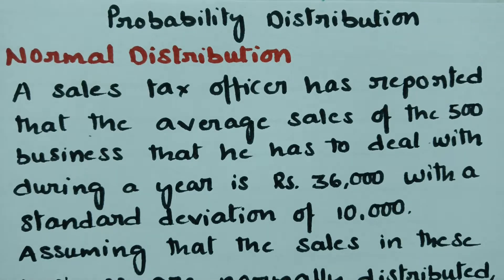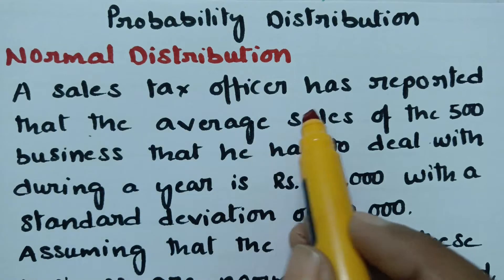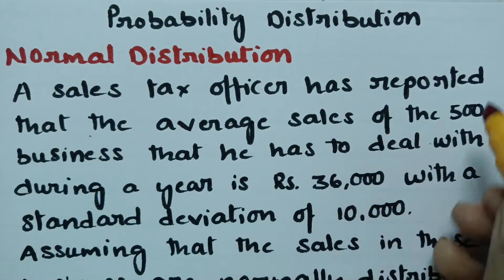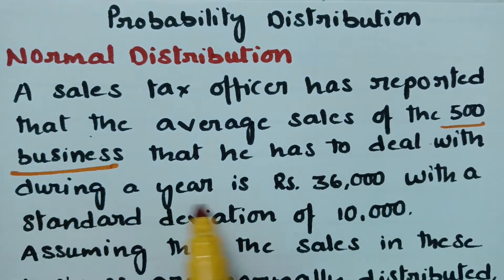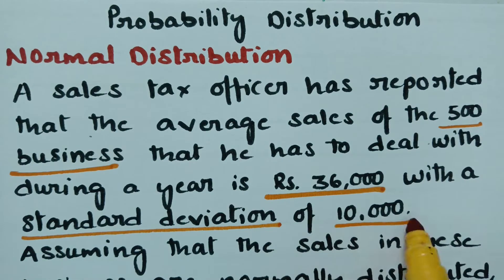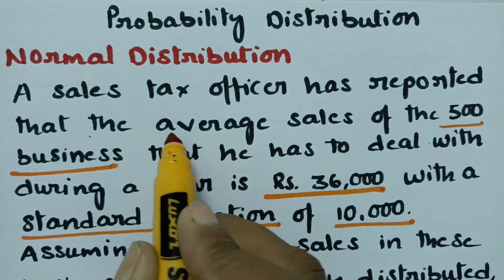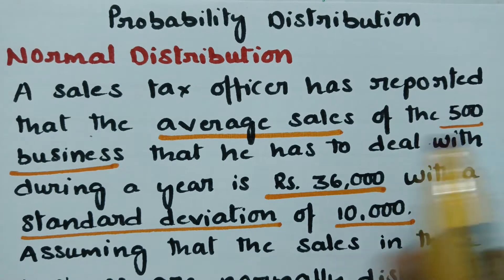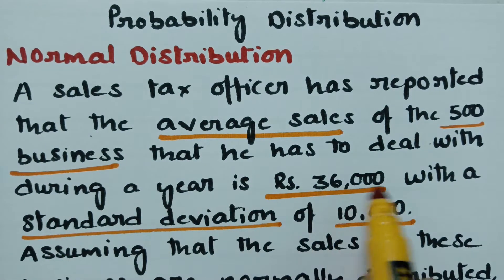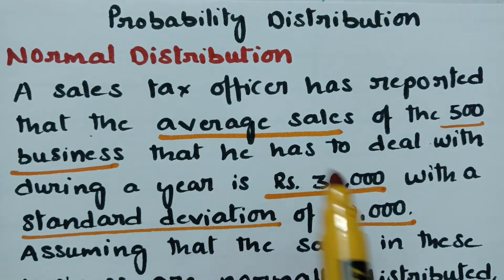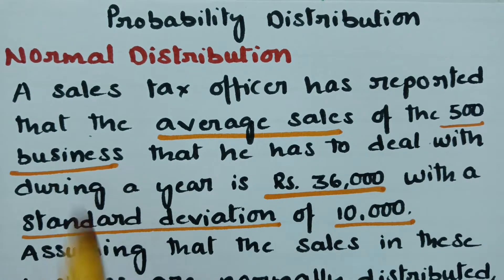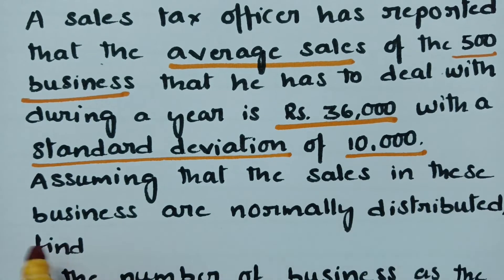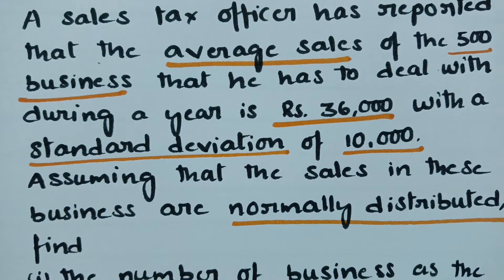This video is on normal distribution. The problem is: a sales tax officer has reported that the average sales of 500 businesses that he has to deal with during the year is rupees 36,000 with a standard deviation of 10,000 rupees. Assuming that the sales in these businesses are normally distributed, we will use the normal distribution to solve this problem.